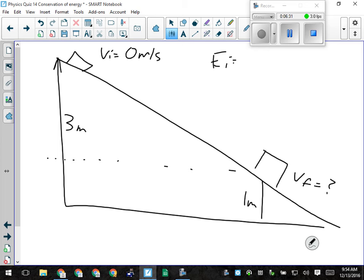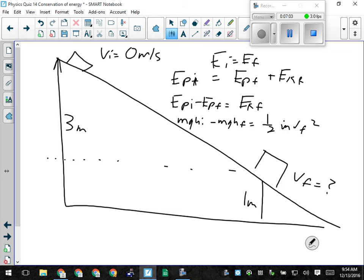Alright. So we've got EI equals EF. OK. And we don't have any kinetic energy at the beginning, so it's all potential. Sorry, EP initial. And then at the end, we've got both. EP final plus EK final. OK. And we're looking for something that's part of EK final. So I'm going to bring the final potential over. So I'll have EPI minus EPF equals EKF. OK. So MGHI minus MGHF equals 1 half MVF squared. The M's are gone. OK. And then I divide both sides by 1 half. And then I square root. OK. Plug in my numbers. And yeah, they're pretty much all the same.